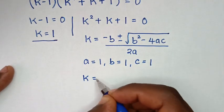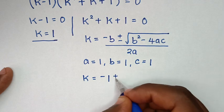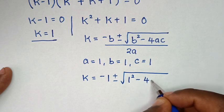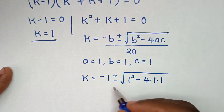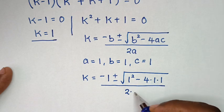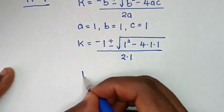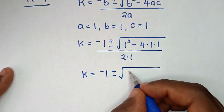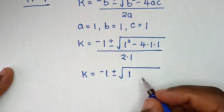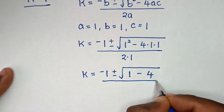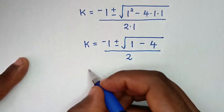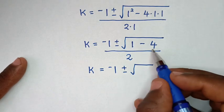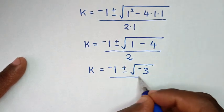So it will be k is equal to negative b, which is 1, plus or minus square root of b square — that is 1 square — then minus 4 times a, which is 1, times c, which is 1, then over 2 times a, which is 1. This gives k is equal to negative 1, plus or minus square root of 1 minus 4, which is minus 3, then over 2.